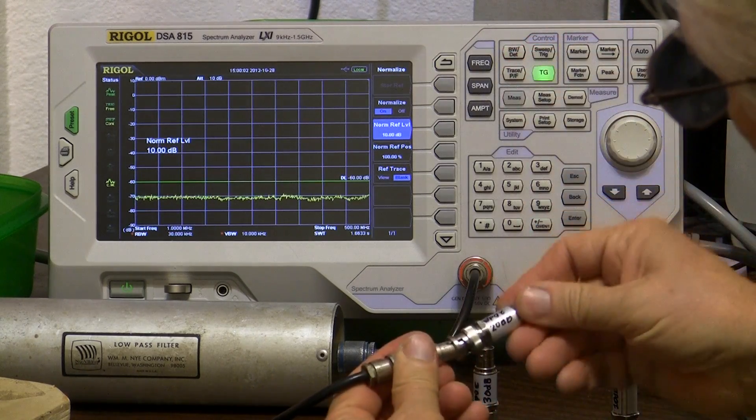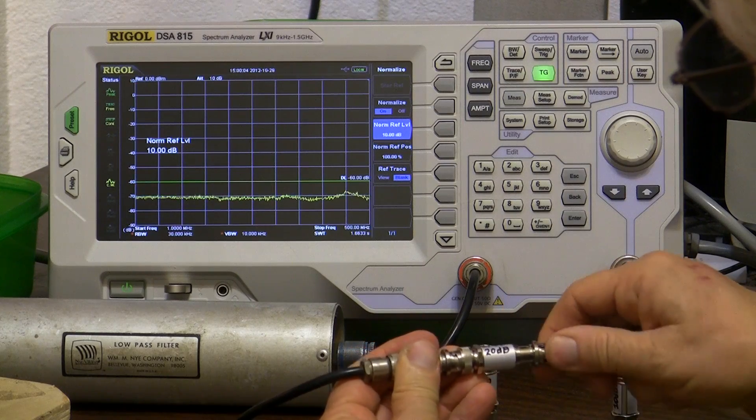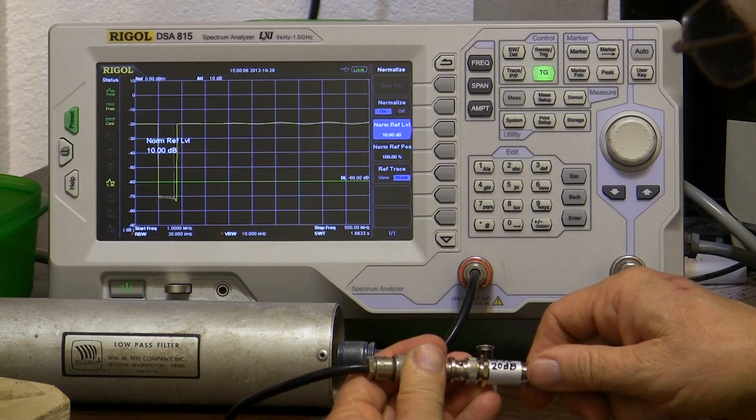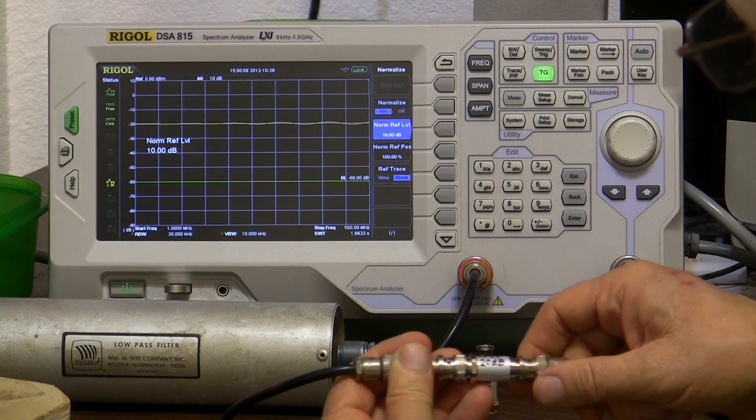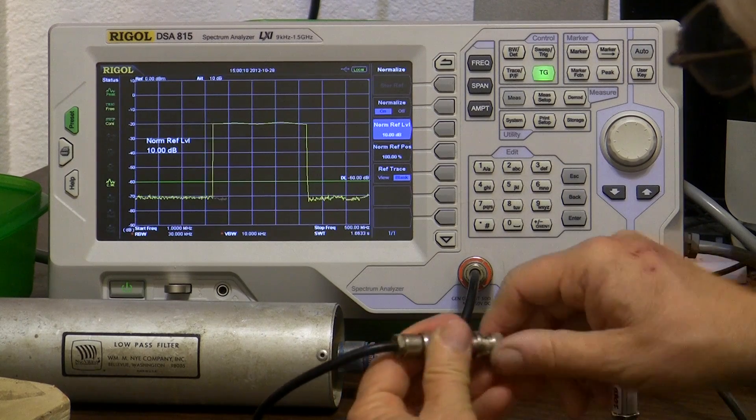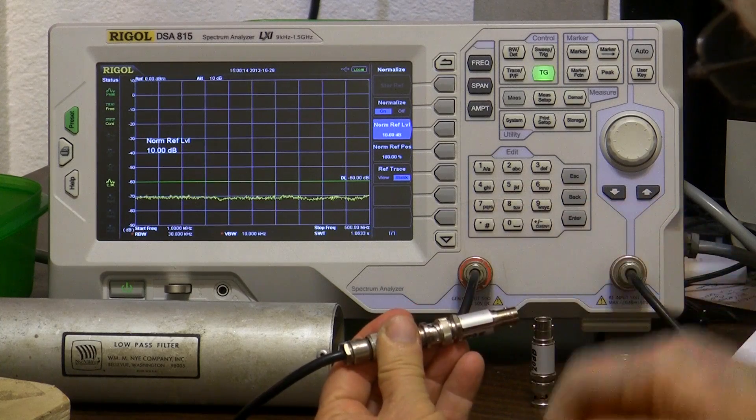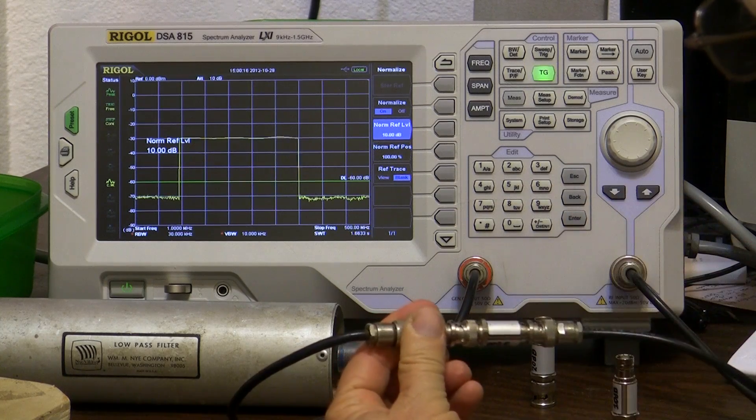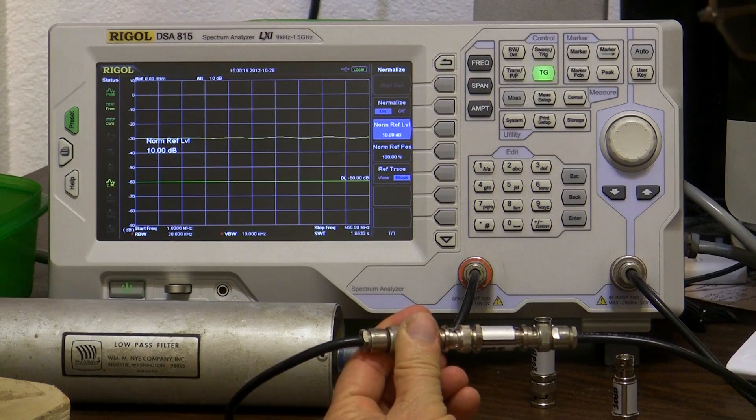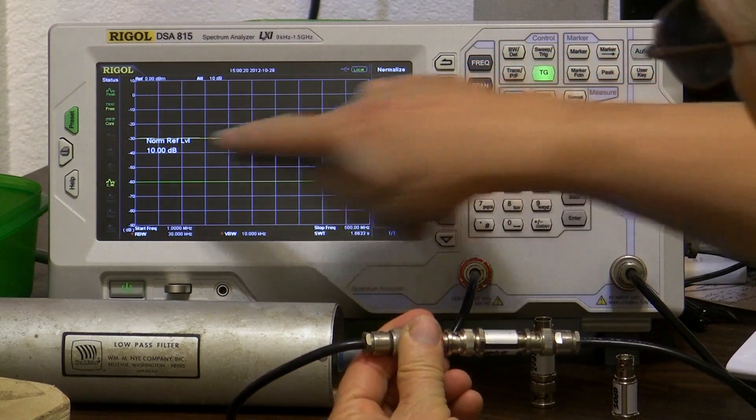20 dB pad, we're good at that I believe. Again right on the line and just a little bit of ripple. 30 dB pad. Okay at 30 dB down we're still fine, we're at minus 30.